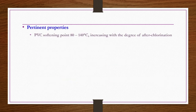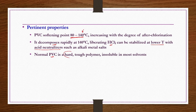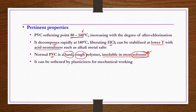Pertinent properties: PVC softening point is 80 to 140°C and increases with the degree of after-chlorination. Above 140°C it rapidly decomposes, liberating HCl. However, it can be stabilized at lower temperatures with acid neutralizers such as alkali metal salts. Normal PVC is a hard, tough polymer but insoluble in most solvents. If improved solubility is desired, you can make a vinyl copolymer rather than simply a vinyl chloride polymer. It can be softened by plasticizers for mechanical working.